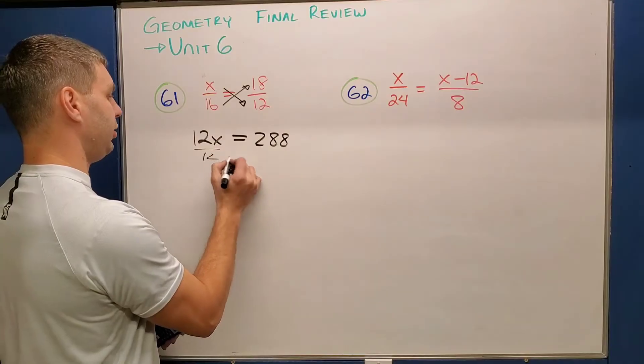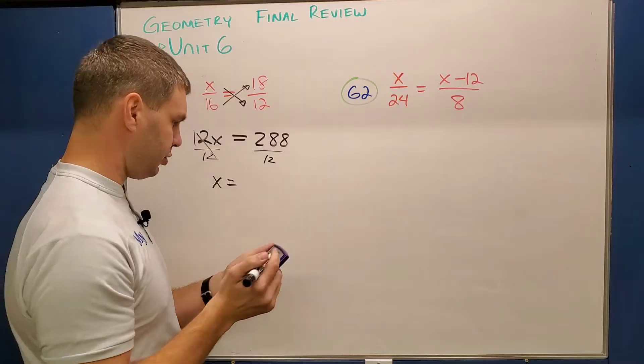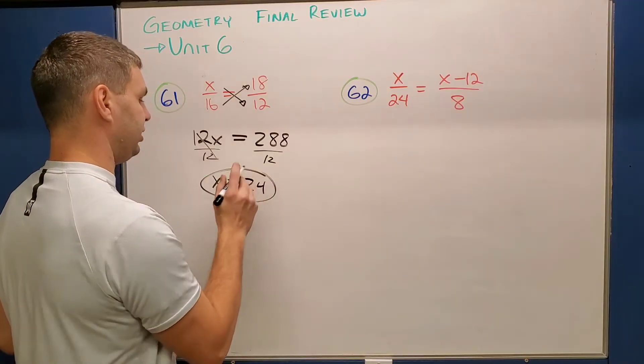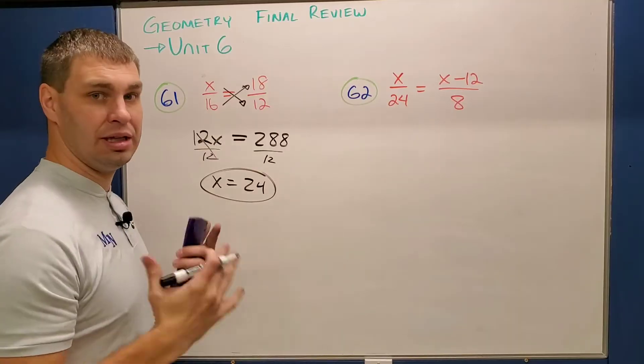288, and then we can solve this by dividing both sides by 12. And let's see, x is going to equal, divide it by 12, 24. So 24 is what makes this proportion true, or this fraction that equals that fraction makes those things true.